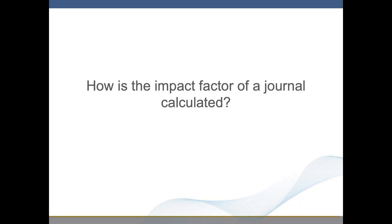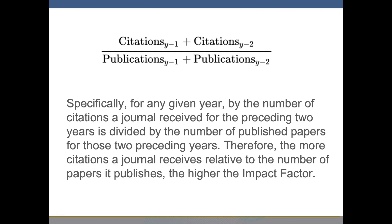How is the Impact Factor of a journal calculated? Specifically, for any given year, the number of citations a journal received for the preceding two years is divided by the number of published papers for those preceding two years. Therefore, the more citations a journal receives relative to the number of papers that it publishes, the higher the Impact Factor.